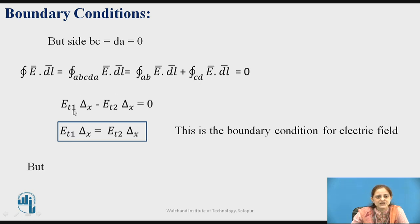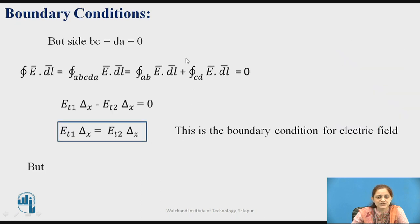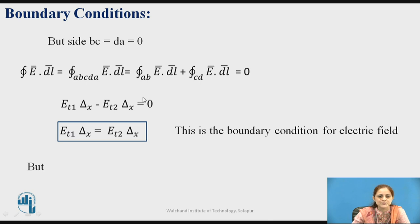E-bar for the AB path is the tangential component for medium 1, denoted ET1, and dL-bar is the length Δx. Therefore, ET1·Δx minus ET2·Δx equals zero. This gives ET1·Δx equals ET2·Δx, which means ET1 equals ET2. This is the boundary condition for the electric field for the tangential component.